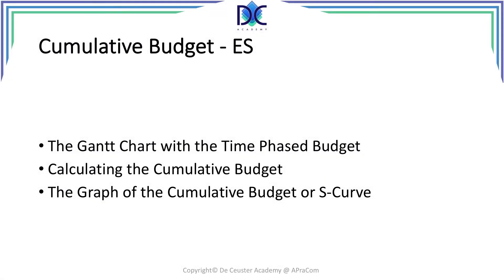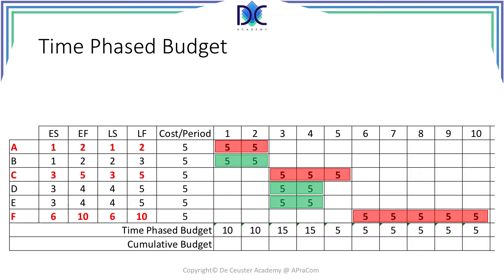We finished the time-phase budget in early start position. Now we will do the same and calculate the cumulative budget. We start with the Gantt chart we created at the end of the previous session. Here we calculate the cumulative budget and then put them in a graph together with the time-phase budget. You can see the same Gantt chart obtained at the end of the previous session. We have the time-phase budget — now we have to calculate the cumulative budget.